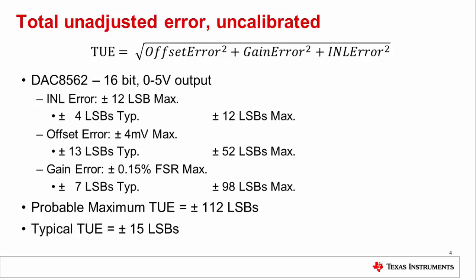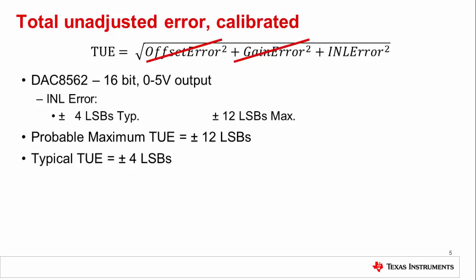Let's see what happens after we calibrate. Calibrating correctly will effectively eliminate the offset and gain error terms of the TUE equation, leaving only INL to affect the TUE calculation. Here we see that by calibrating we have reduced the TUE to plus or minus 4 LSBs with a maximum of plus or minus 12.